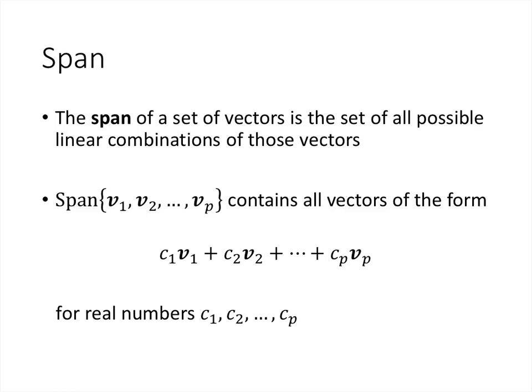Span is defined in terms of linear combinations. We have a set of vectors v1, v2, all the way up through vp, so the letter p just represents how many of those vectors there are. The span of that set of vectors is just all of the possible linear combinations that we can get using those vectors, where the c1 and the c2 and up through the cp can just be any real numbers, any scalars, to form that linear combination.